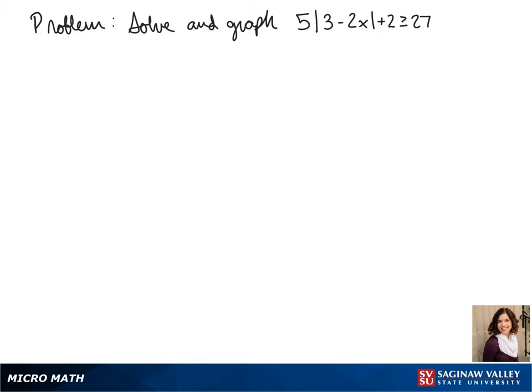Welcome to another day of algebra. Today we'll be solving and graphing an absolute value inequality: 5 times the absolute value of 3 minus 2x plus 2 is greater than or equal to 27.